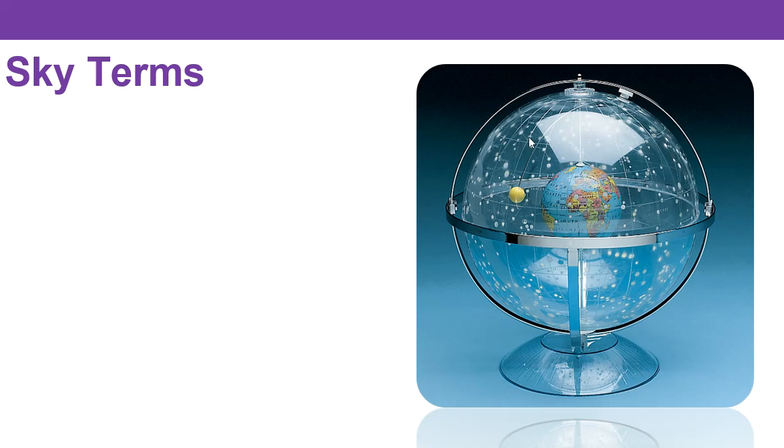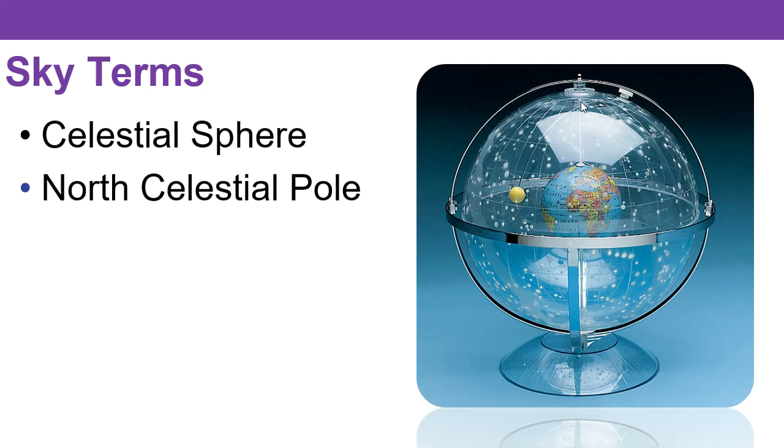Remember that it's an imaginary sphere in which the Earth is in the center, and if we have the Earth on a rotating axis like we have here, projecting upward will give us the north celestial pole at that point at the top, and then down here south is the south celestial pole.